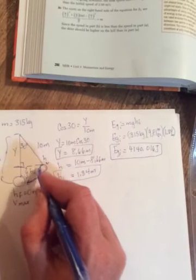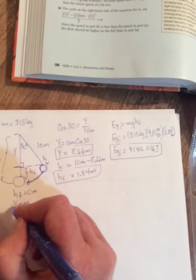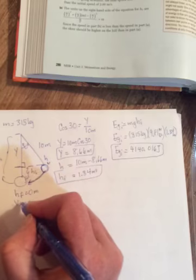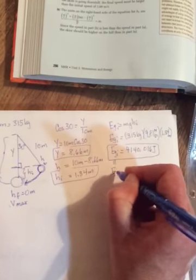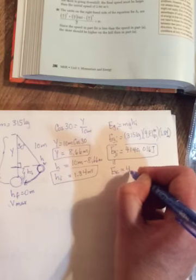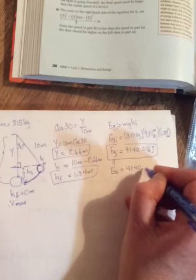So here, all of its energy is gravitational potential. Here, all of its energy is kinetic. So what is its kinetic energy at the bottom of its swing? It has to be equal to the gravitational potential that it had at the top of its swing.